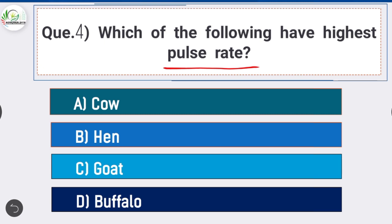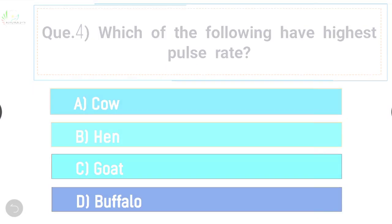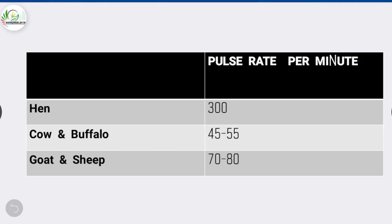Question number four: which of the following has the highest pulse rate? The answer is option B - hen. Hen has the highest pulse rate. The pulse rate per minute of hen is 300. The pulse rate per minute of cow and buffalo is 45 to 55, and the pulse rate per minute of goat and sheep is 70 to 80.